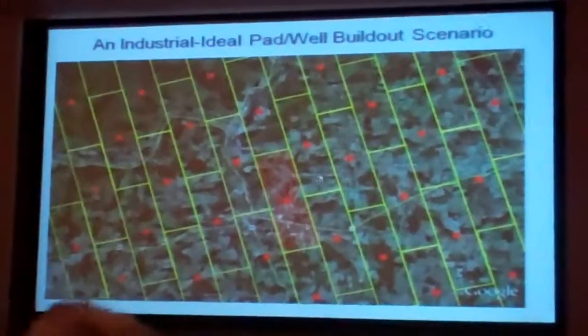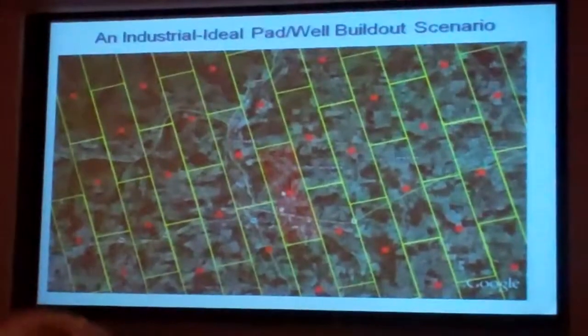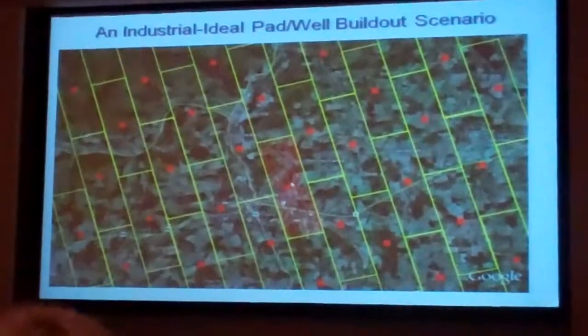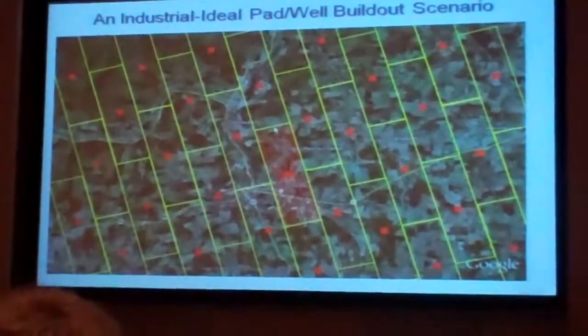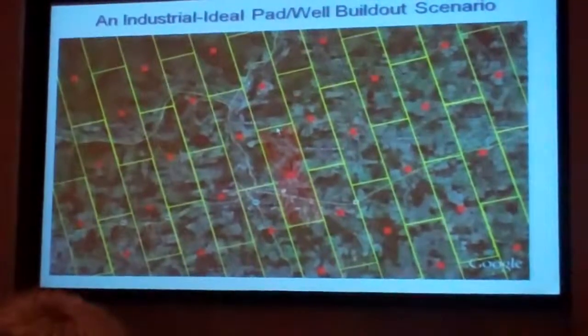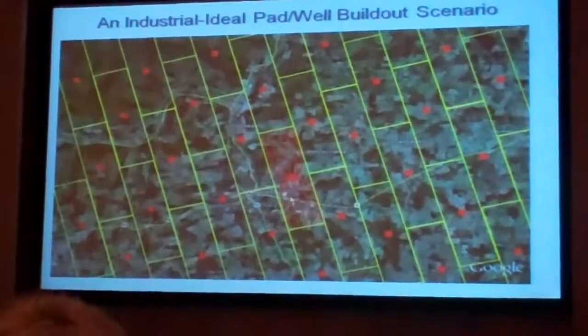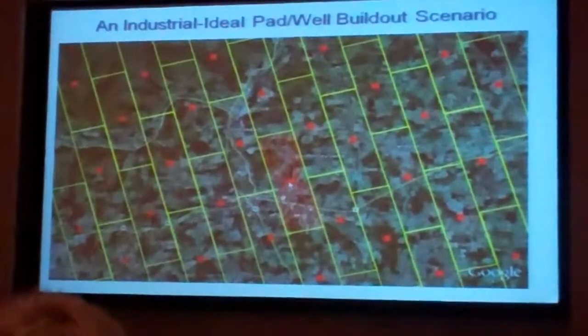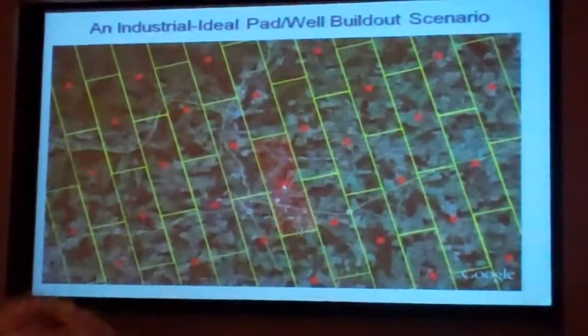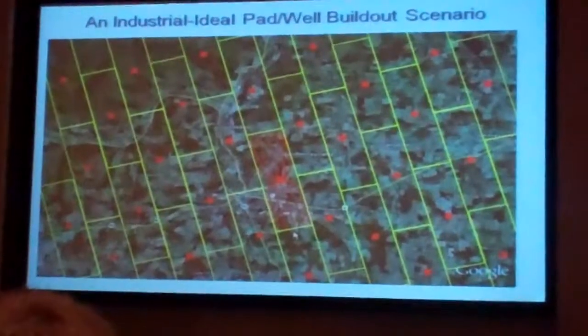And they would then drill 3, 4, 5, 6, 7, 8 wells roughly north-northwest, turn around and drill 6, 7, 8, 9, 10 wells roughly south-southeast.